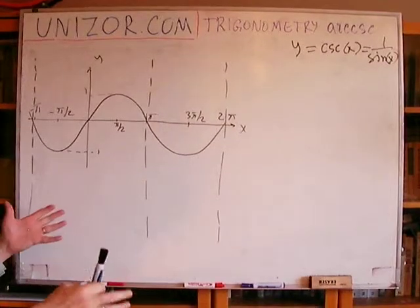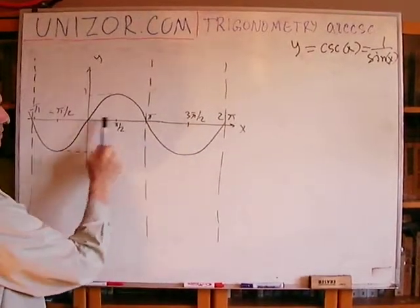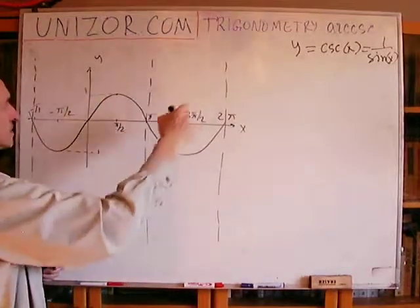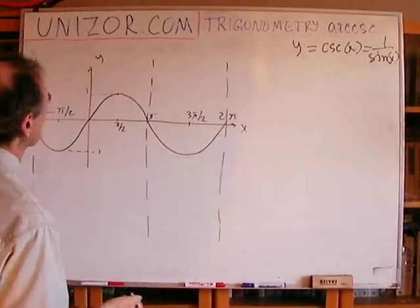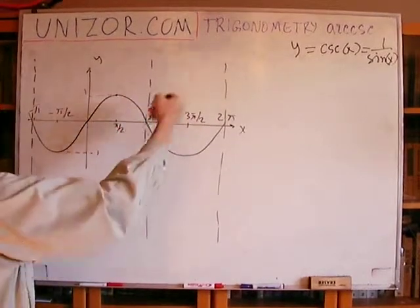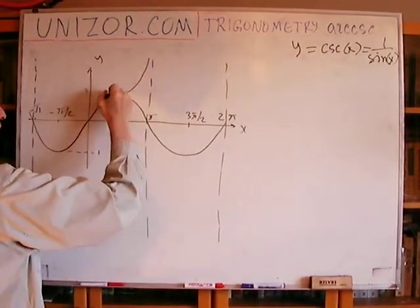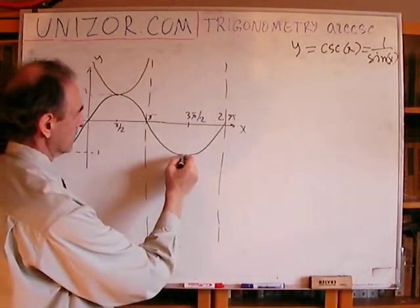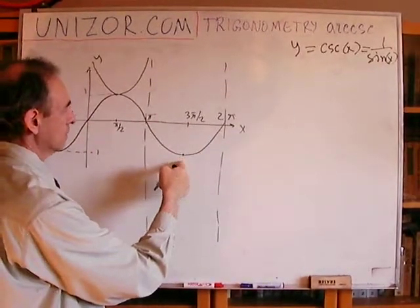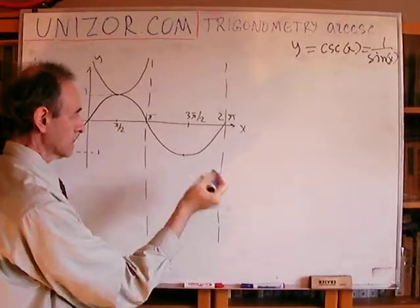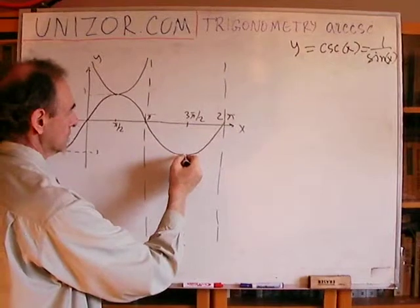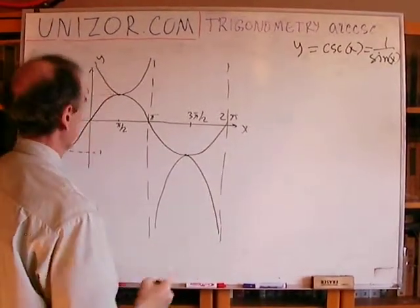Now, how does the sine look like? Well, let's consider this interval from one asymptote to another. In the middle, it's equal to 1. So 1 over sine will also be equal to 1, right? From this point, if you go left and right, sine goes down to 0 while still being positive. So 1 over sine would go to infinity, remaining positive. In this case, we have similar situation, but with a negative sine. So at 3 pi over 2, it's minus 1. So 1 over sine will also be minus 1. And then left and right from this point, sine goes down, which means 1 over sine goes up to infinity, but in this case, it's a negative infinity.